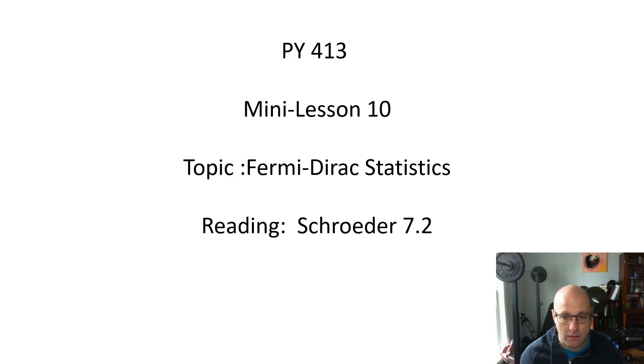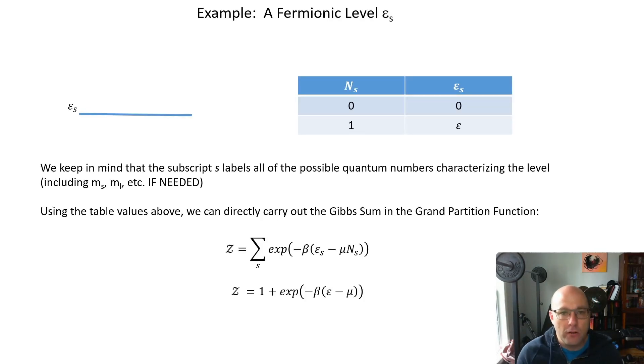This is section 7.2 from Schroeder. We looked at this table in the last set of lectures when we were talking about how fermions can occupy a level, but ultimately this is all that we need to build the grand partition function. So we think about a level e_s and we ask what are the possible combinations of n_s and e_s that could be relevant for this level. You could have no particles and therefore no energy, that's an empty level, or you could have one fermion and then some energy value epsilon. This is it if you have a fermionic level.